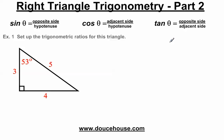Hello everybody, how you doing? This is Mr. Douse, and on this video I'm going to talk about right triangle trigonometry. This is the part two video. If you haven't seen the part one video, I highly recommend watching it. You can go to my website and track it down. In this part two video, I'm going to talk about setting up trigonometric ratios as a fraction and as a decimal. Then I'll move on to my third video, which is going to be finding angles.